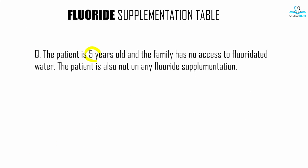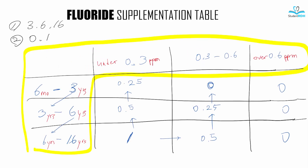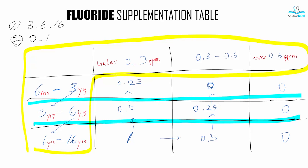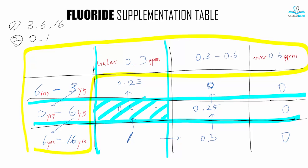Let's look at an example. The patient is 5 years old, the family has no access to fluoridated water, and the patient is not on any fluoride supplement. Looking at the table we just made: the patient is 5 years old, so we focus on the middle age row. There is no fluoride, so we go to the column under 0.3 ppm. Put them together and the answer is 0.5. You can do this with any combination of values.